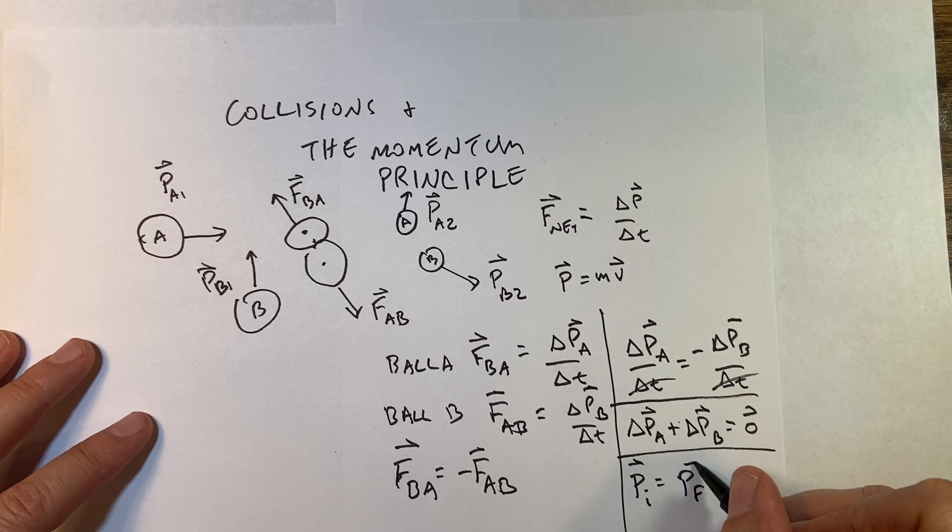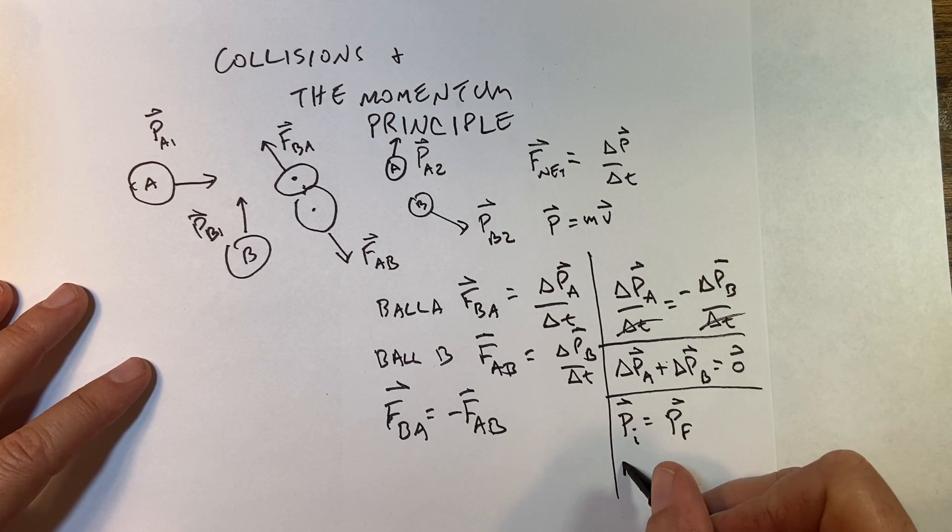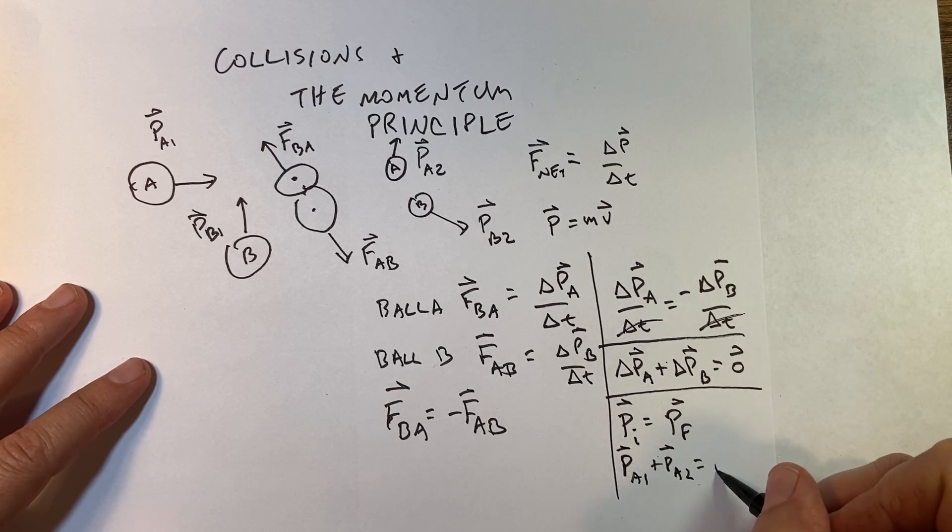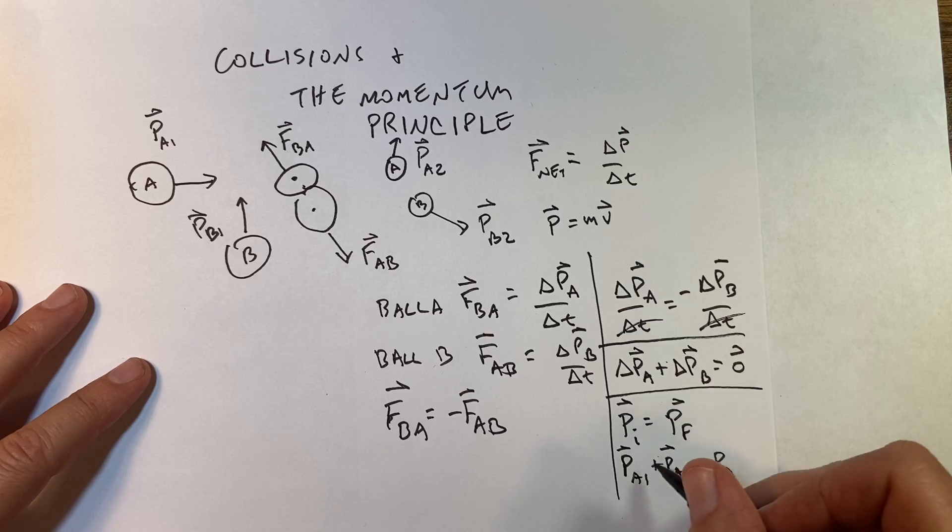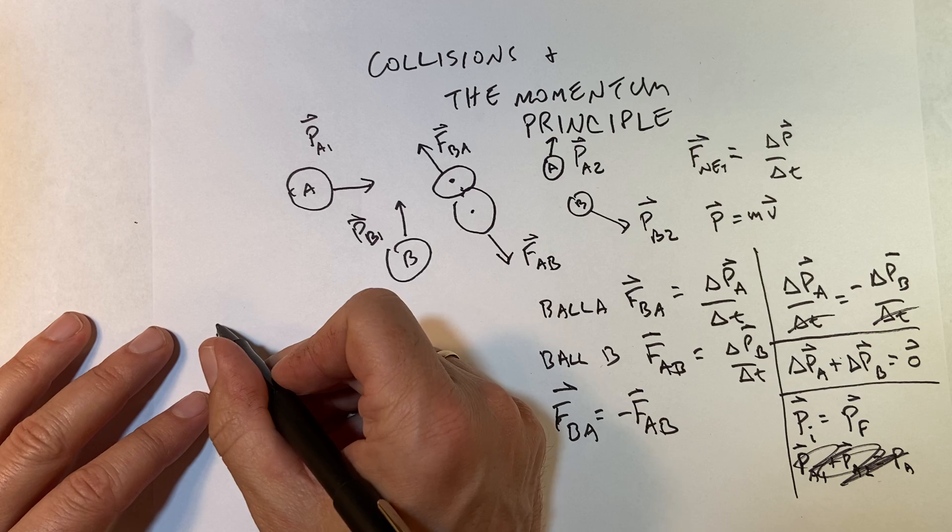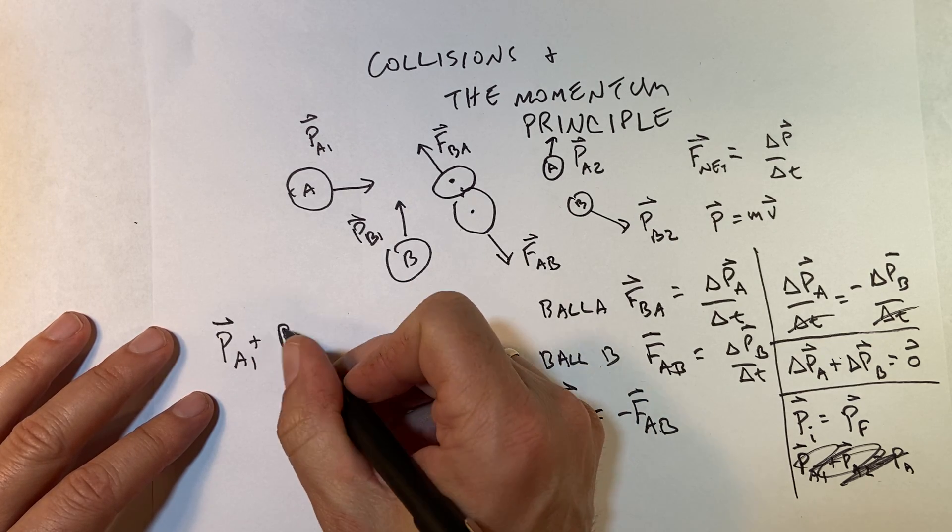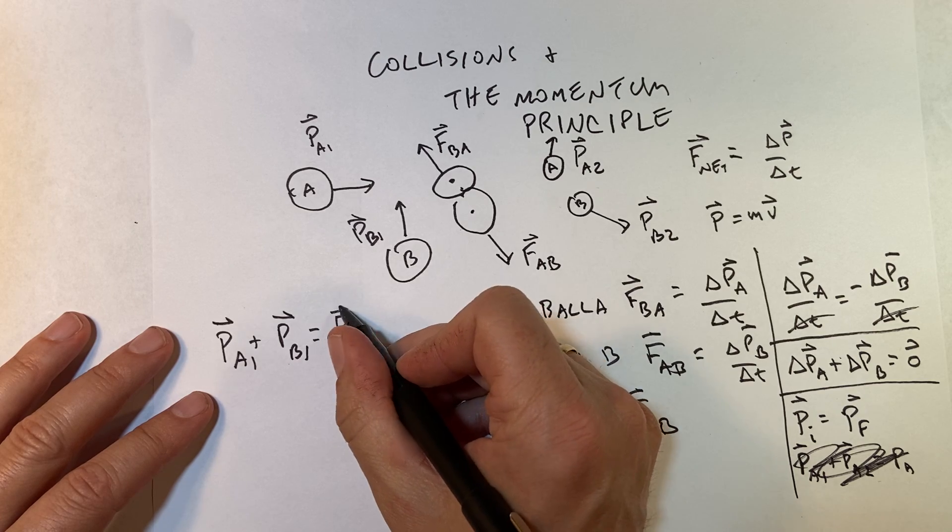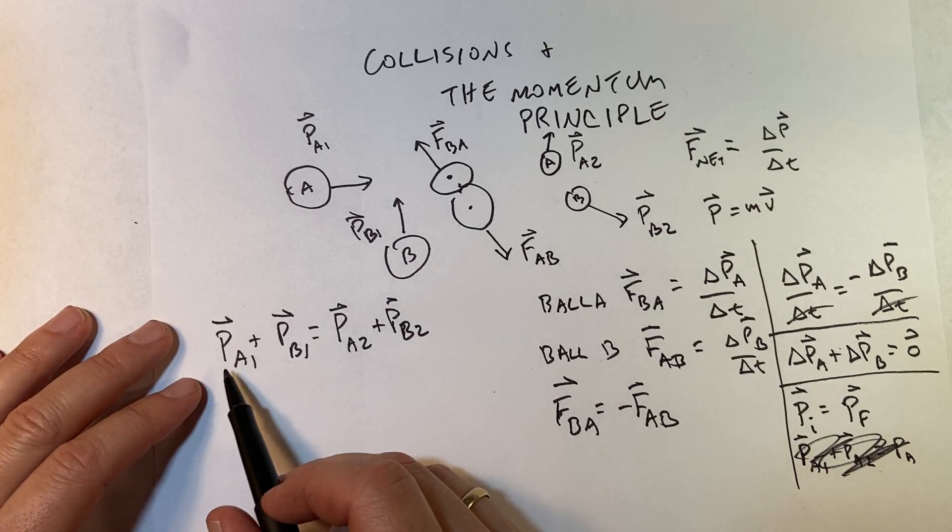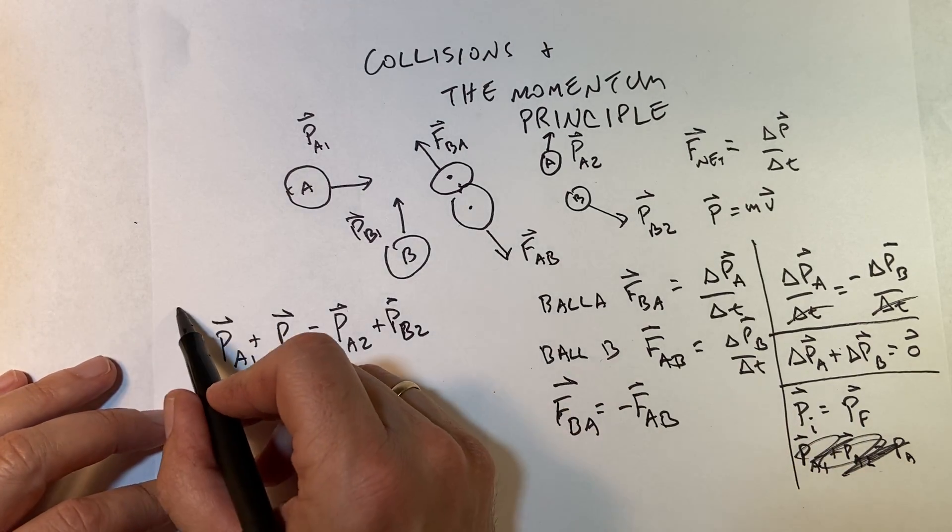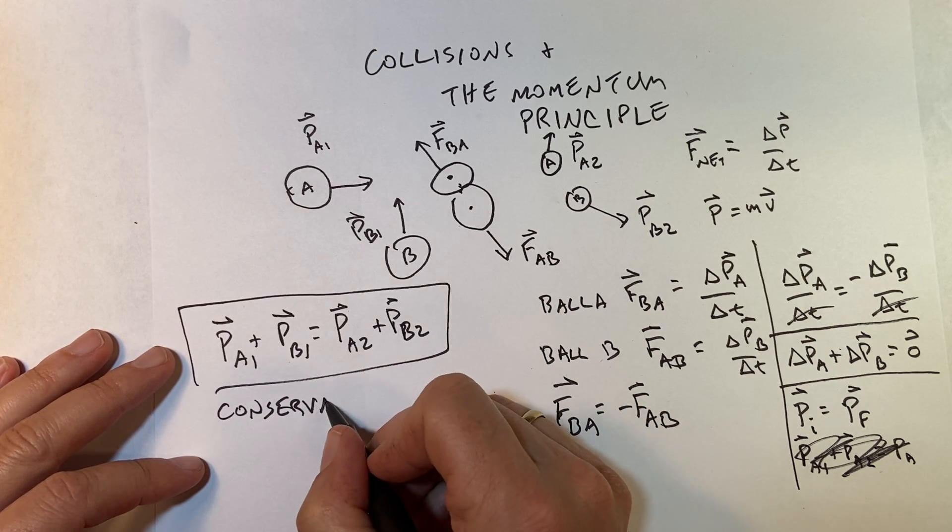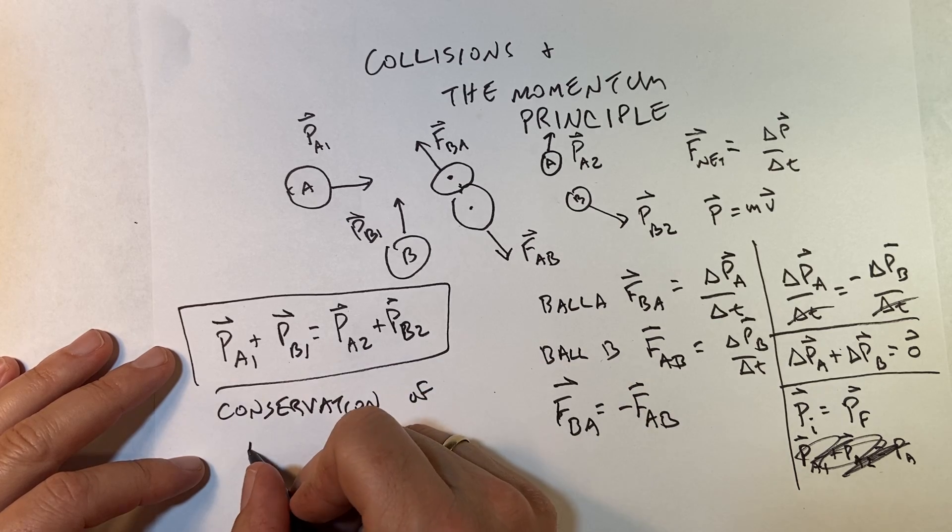Or I could say p_A1 plus p_B1 equals p_A2 plus p_B2, right? Because the initial is all the initial momentum and the final is that. This is what we call conservation of momentum.